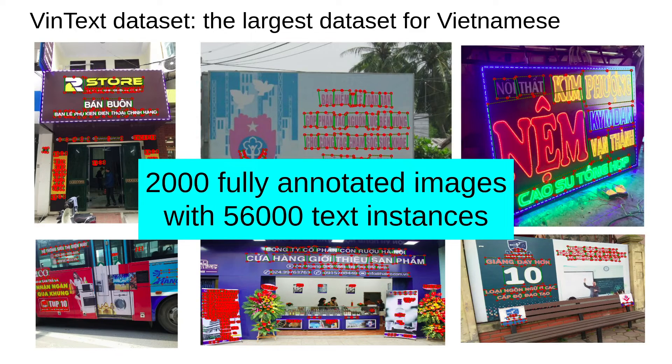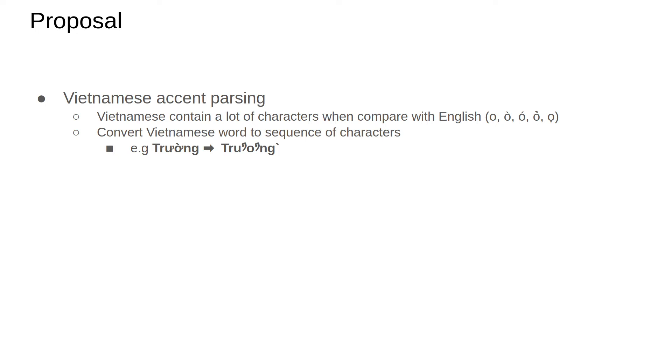The number of text instances of our dataset is really impressive when compared with previous standard English scene text datasets, because text images in our dataset are really dense. According to our knowledge about Vietnamese, this language contains a lot of characters when compared with English. So, we propose to convert Vietnamese words to a sequence of characters. For example, trường could be parsed to t-r-u-ơ-n-g and accents of VinText.